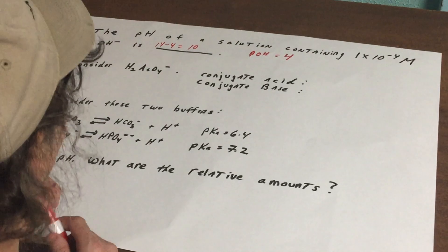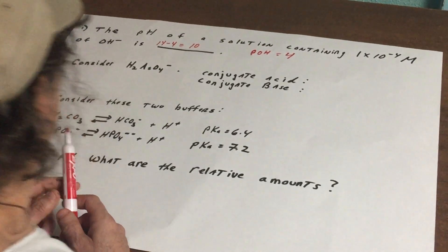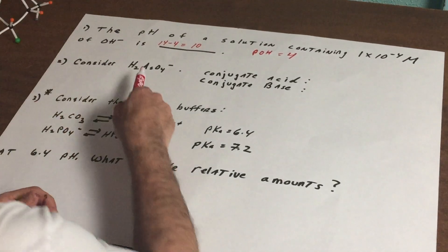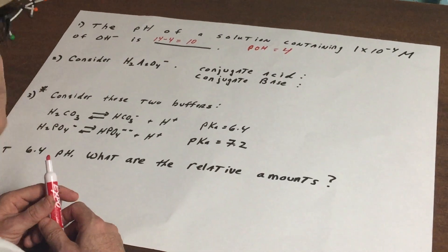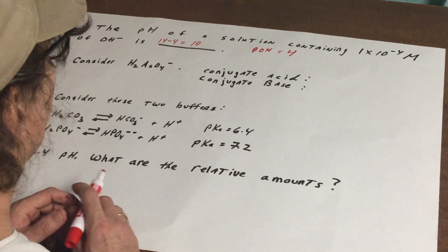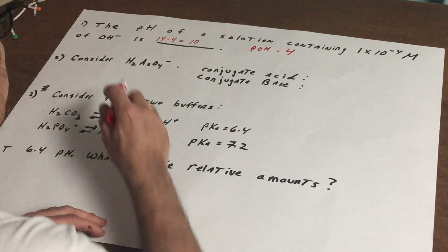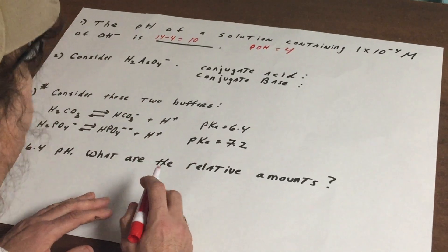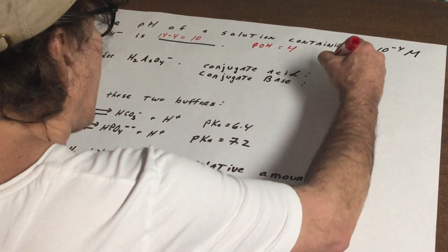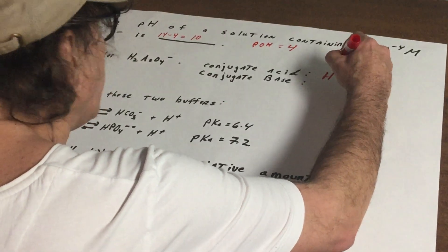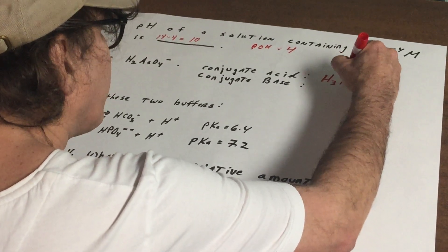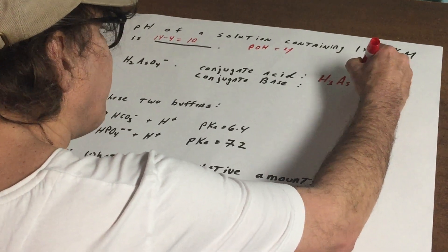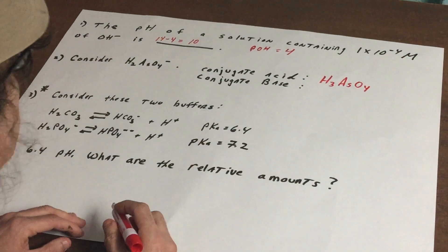We want to consider the dihydrogen arsenate anion H2AsO4-. This is a sure bet easy question on the DAT and I say to you what would be the conjugate acid? So the conjugate acid of this, we simply add an H and that would give me H3AsO4.